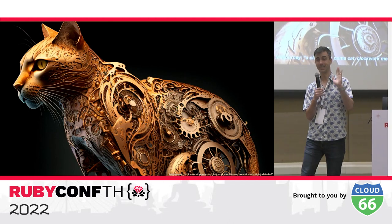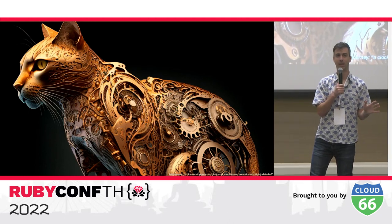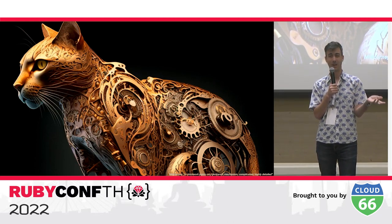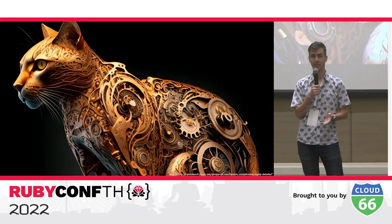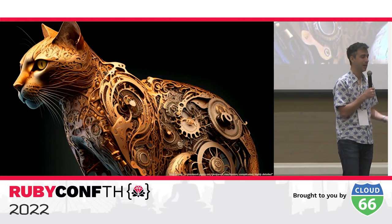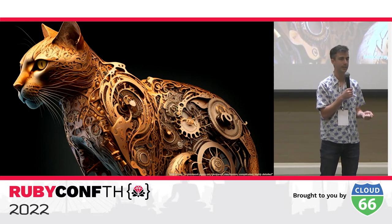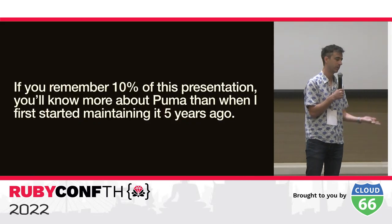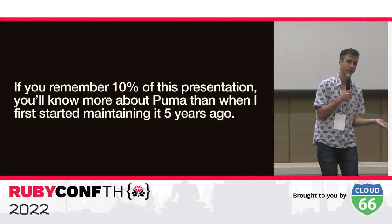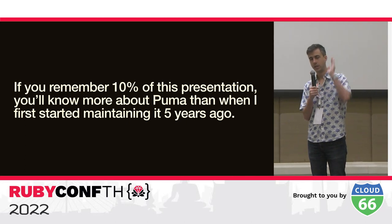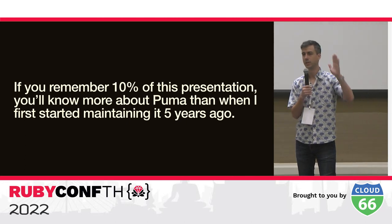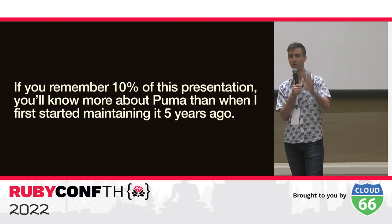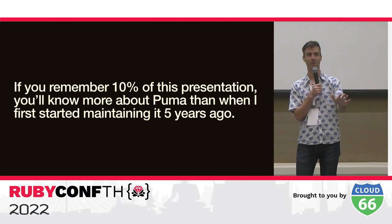Puma is complicated — it's not simple. It's around 5,000 lines of Ruby and 4,000 lines of native extension code. It's not a huge project by any metric, but it is complicated. It uses concepts you probably aren't familiar with from your day job in Ruby, because most of us are web application developers. But if you remember just 10% of this presentation, you know more than I did five years ago when Evan made me the maintainer.